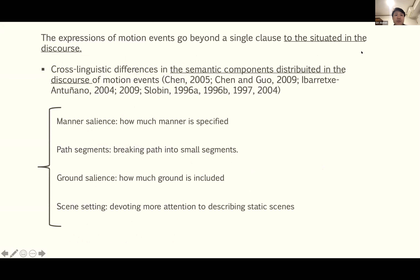The problem is that expressions of motion events go beyond the single clause and are situated in discourse. We can see cross-linguistic differences in semantic components distributed in the discourse of motion events. Researchers specify the discourse of motion events in four aspects: manner salience, path segmentation, ground salience, and scene setting.